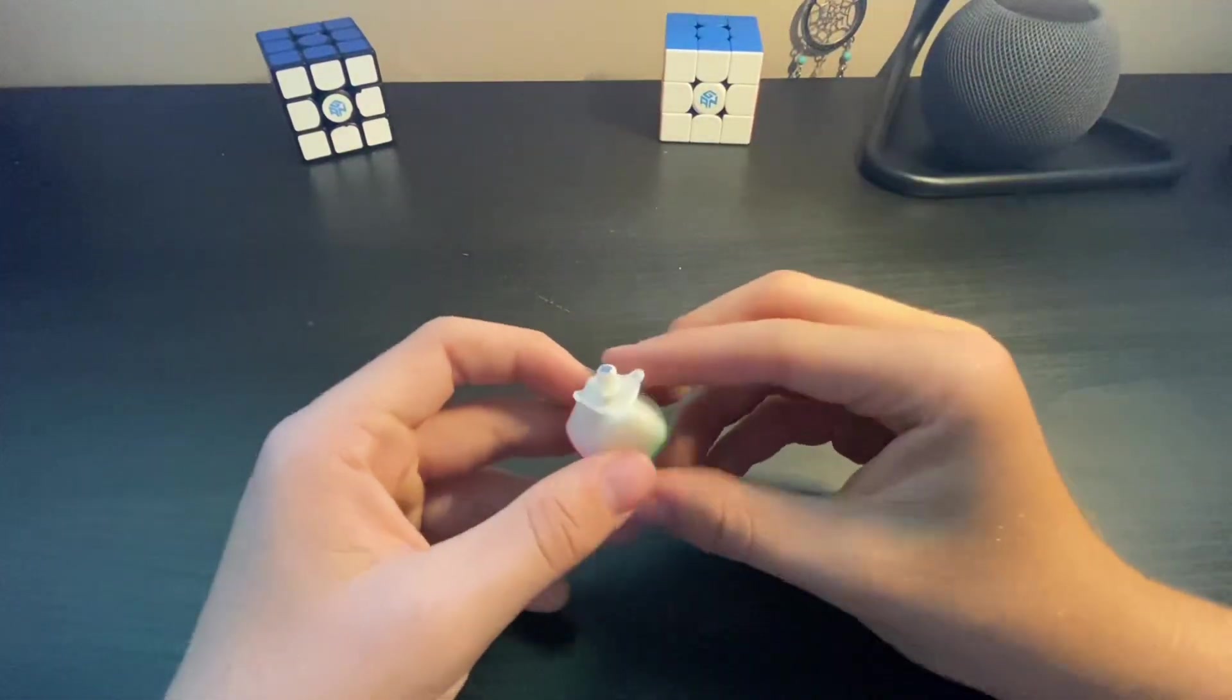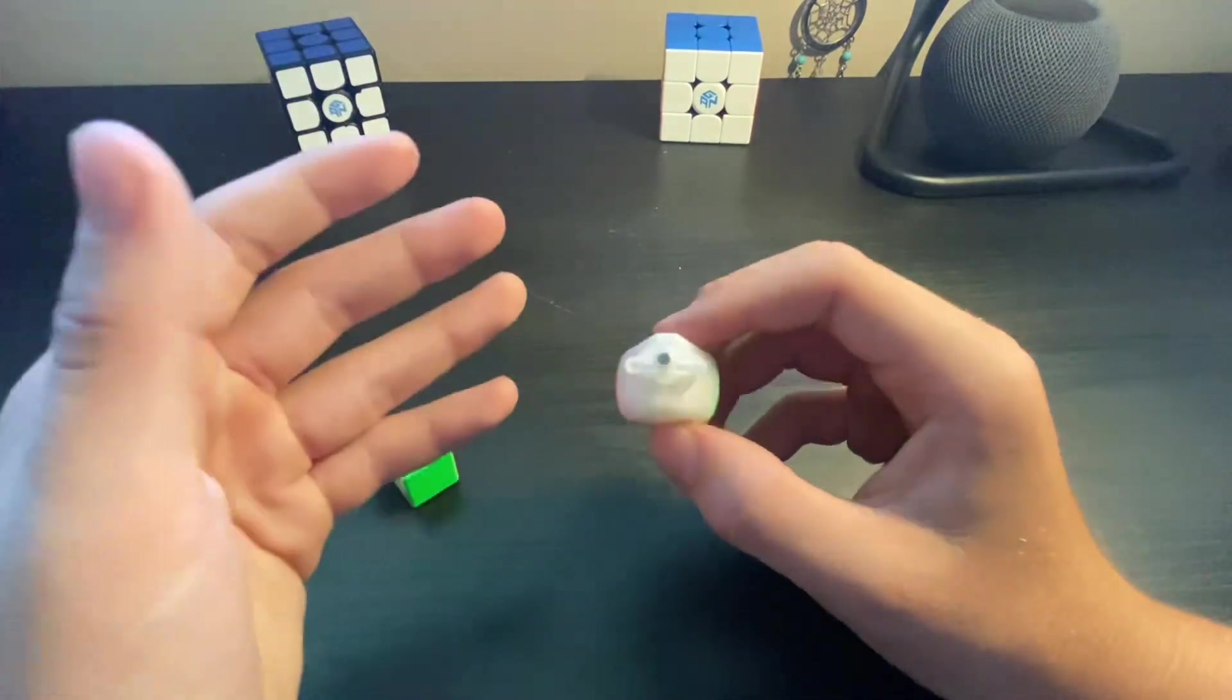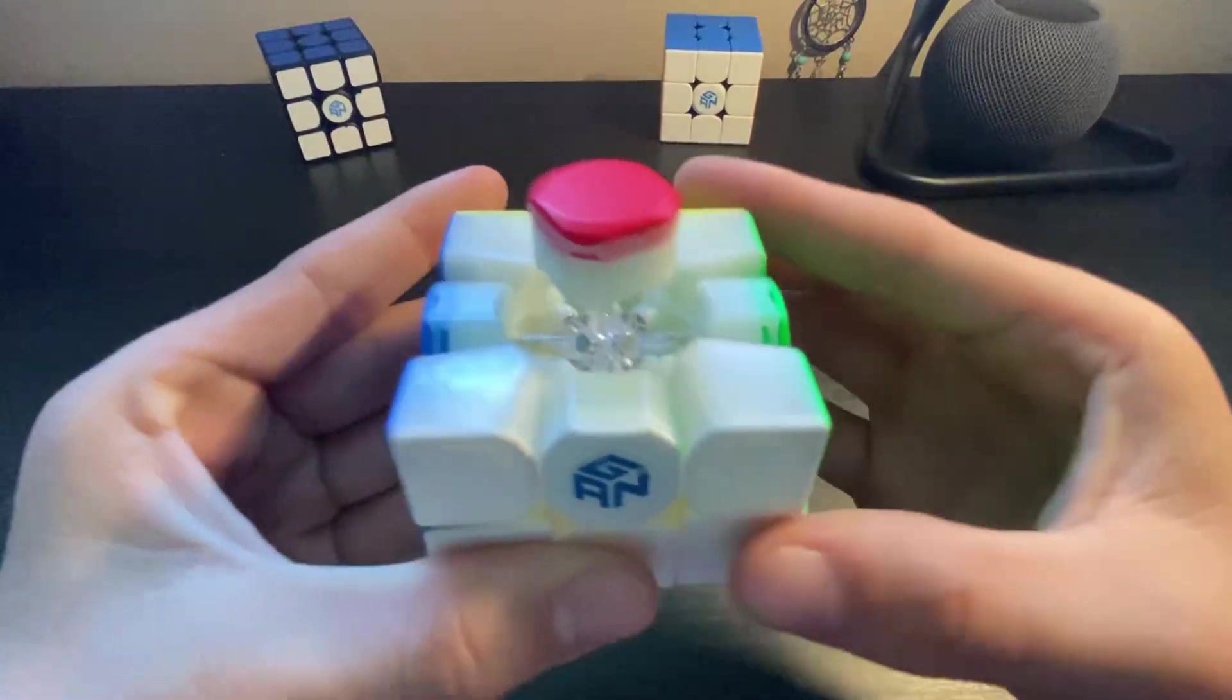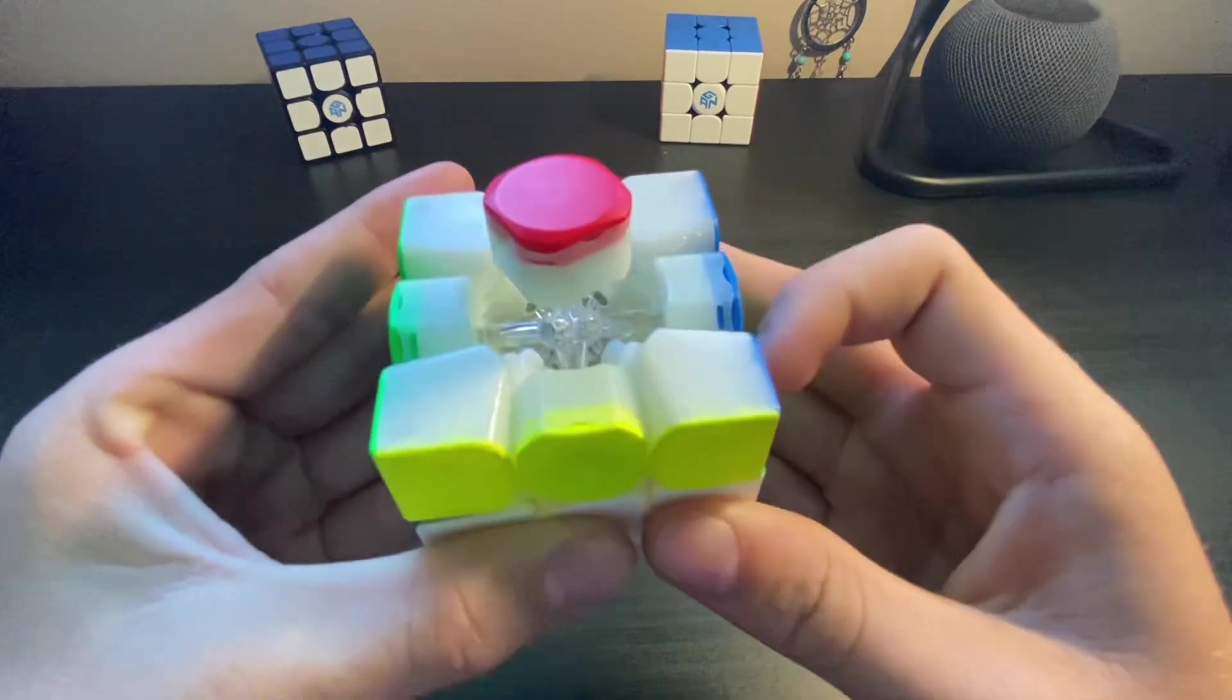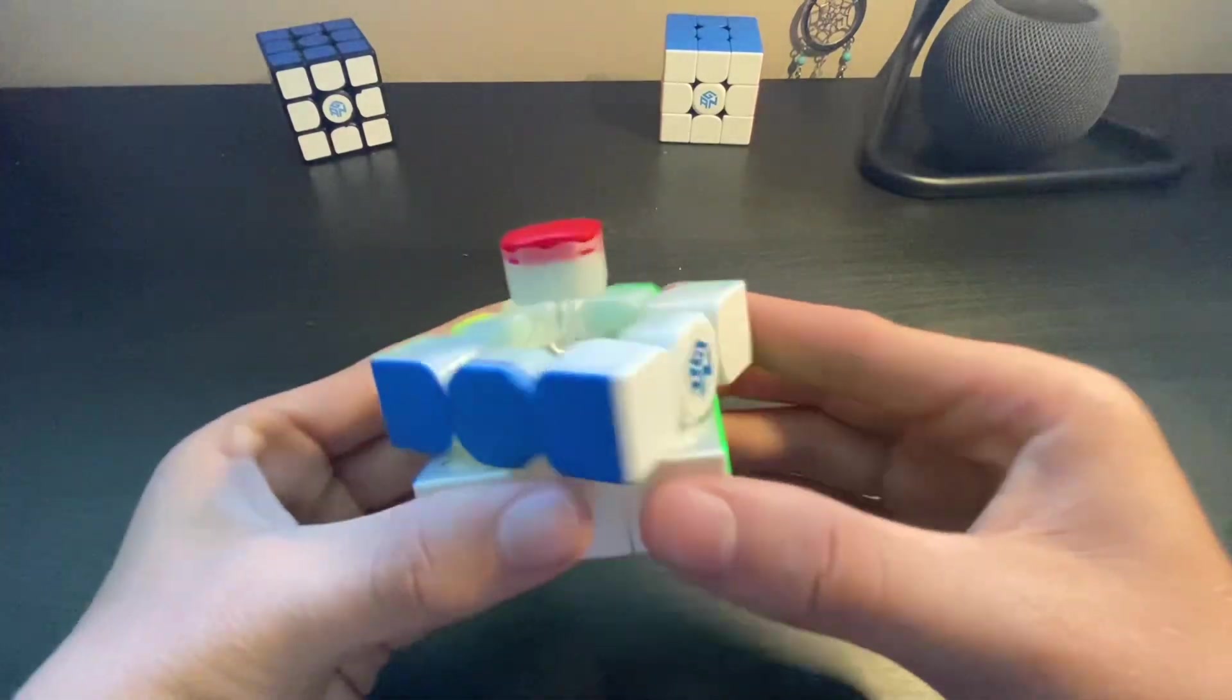Edge magnets do the exact opposite. Instead of coming closer to the core of the cube, they actually repel the cube. This repelling allows for much more controllable and smooth turning, compared to regular speedcubes that lack a maglev core.